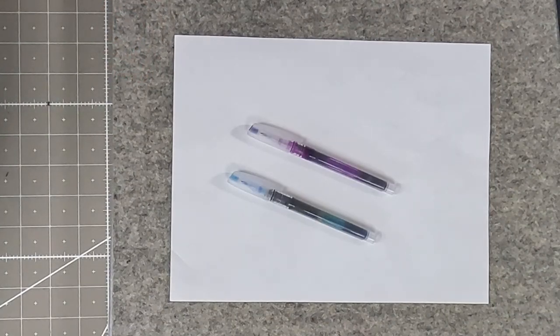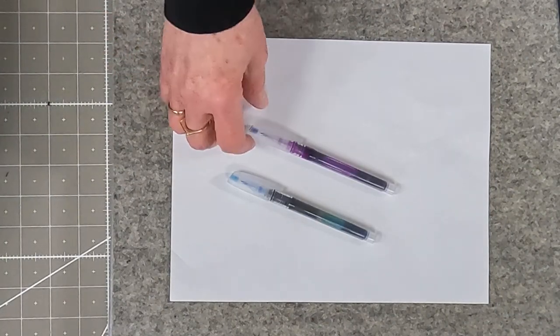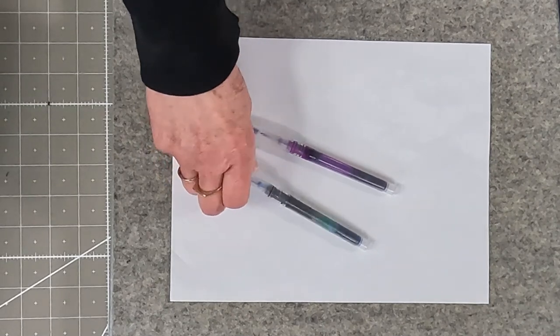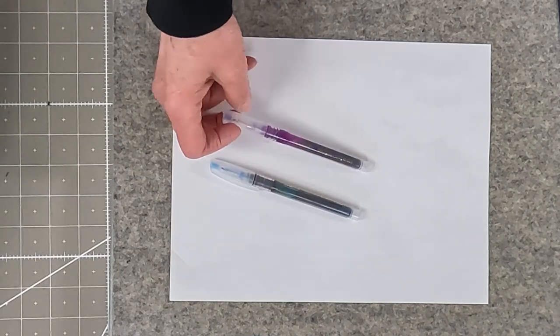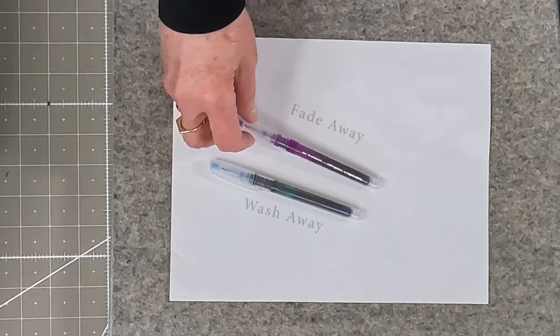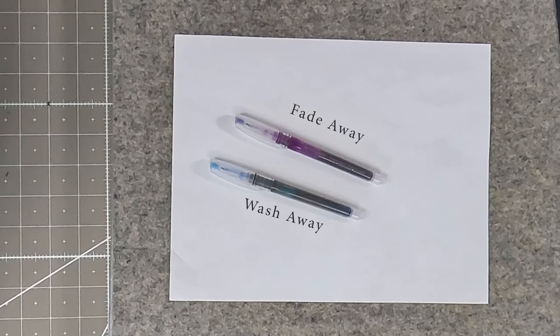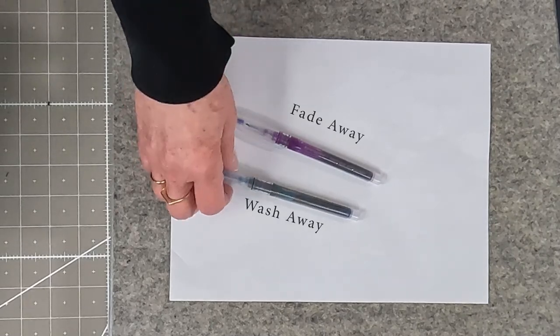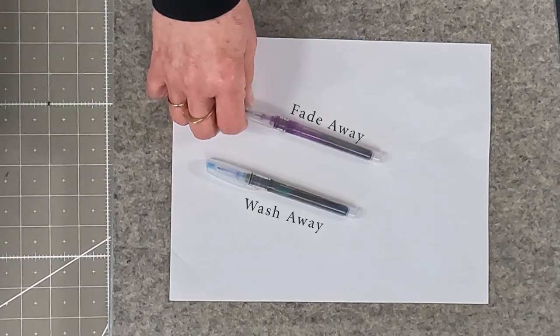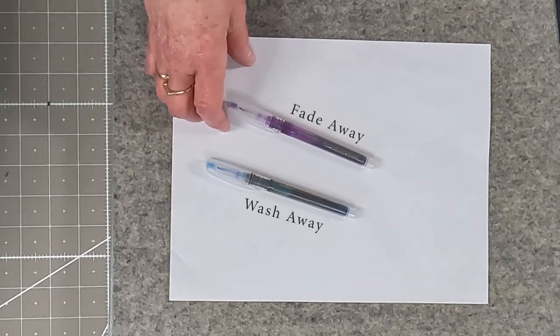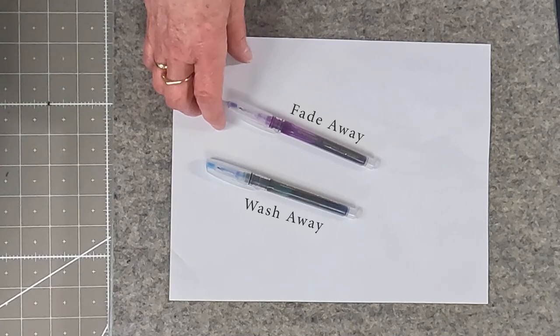The next item for marking your quilts are heirloom pens. They come in two types. There's the blue one, which is wash away, and then there's the purple one that is fade away. Now if you want your marks to last a long time, you would use the blue one. The purple one, once you've marked it, between 12 and 24 hours later the lines will disappear.